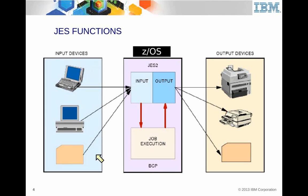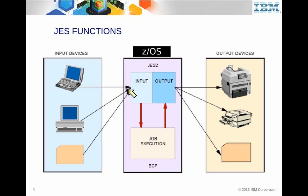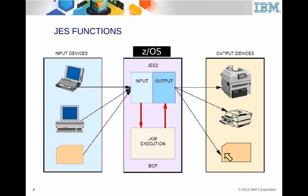Many different input devices can put things into the JES input queue. JES itself is a subsystem of z/OS. It has an input queue, an execution queue, and an output queue — those are the three queue types. You can get things into the input queue from many different sources; FTP was even one of them. There are lots of ways to get things into the JES input queue to be executed, and then the output gets collected by JES. Once the output is in the output queue, it can go to a physical printer or be placed on some other medium.